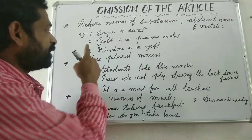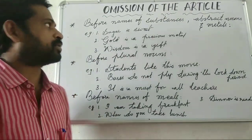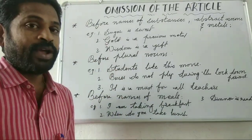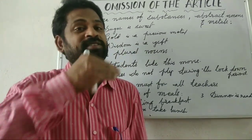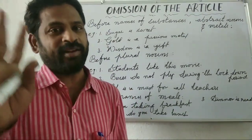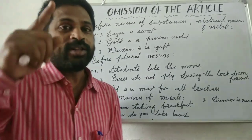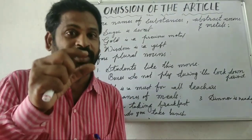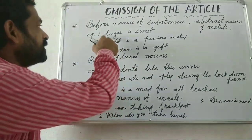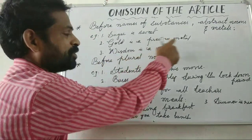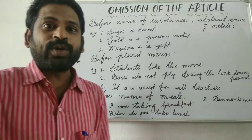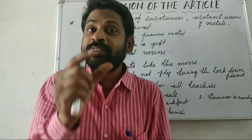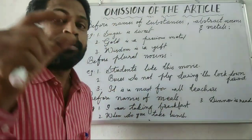These words sometimes appear with an article also. For example: 'The sugar which you lent me yesterday was not clean.' Here I am speaking about a particular thing, so I can use 'the'. But 'Gold is a precious metal' is generalized. 'The gold which was given by my parents' — there I am using 'the gold' because I am particularly speaking about that gold given by my parents.